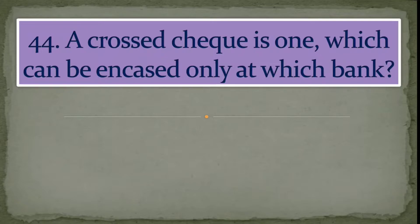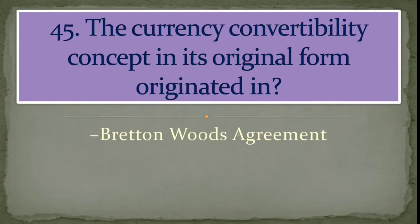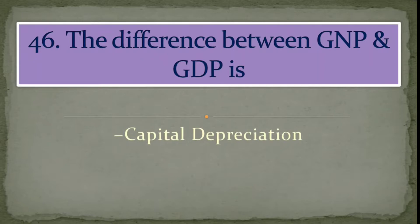Question number 45: The currency convertibility concept in its original form originated in? Answer: the Bretton Woods agreement. Question number 46: The difference between GNP and GDP is? Answer: capital depreciation.